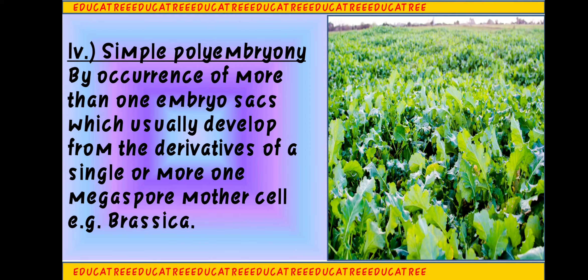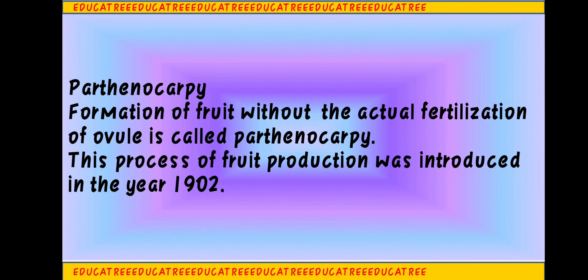The last type is Simple Polyembryony. In Simple Polyembryony, embryo formation occurs due to the presence of one or more embryo sacs. That is why we call it 'simple' — because the embryo formation happens due to the embryo sac itself. Members of the Brassica family are examples where Simple Polyembryony has been mostly observed.